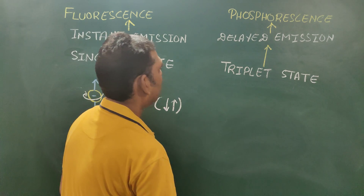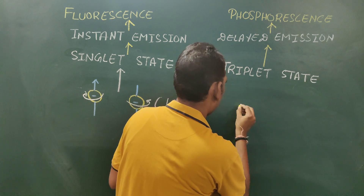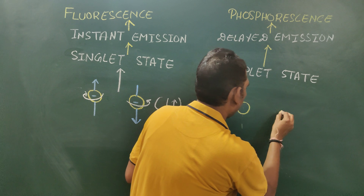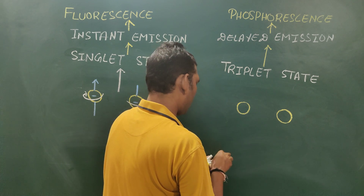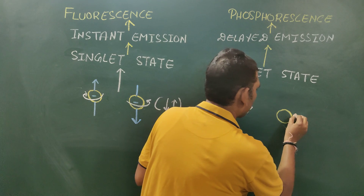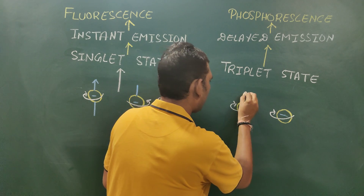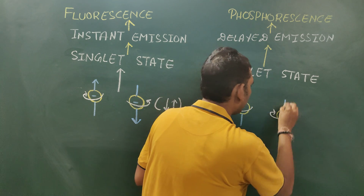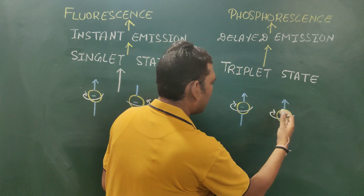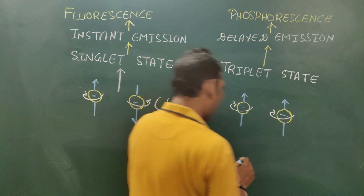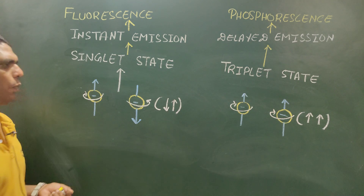Now, what is the triplet state? In molecules where both electrons have the same spin — both rotating in a clockwise direction — their magnetic fields are also in the same direction, represented by arrows both pointing up. So the magnetic fields generated by electrons spinning in the same direction are in parallel directions with each other.